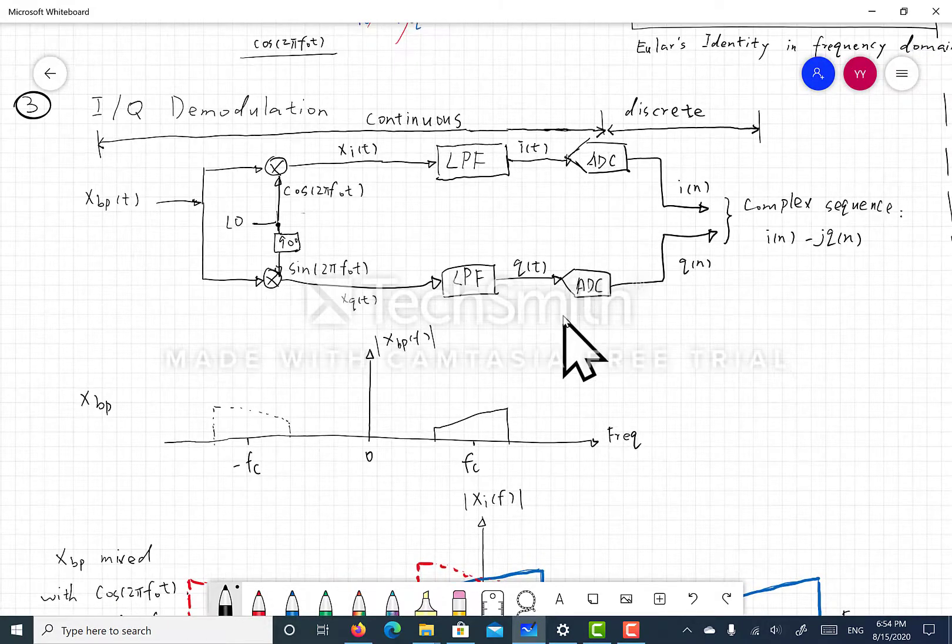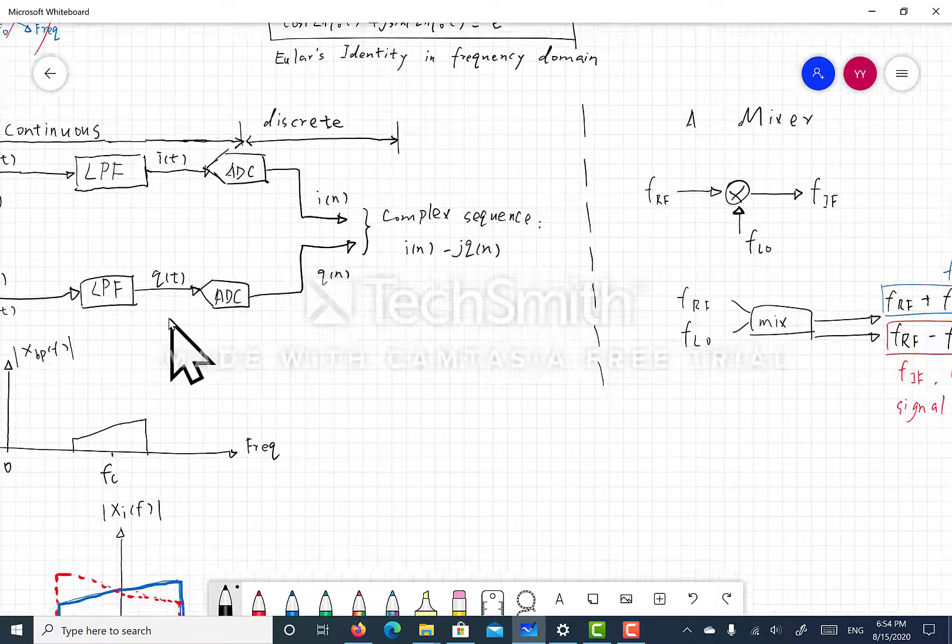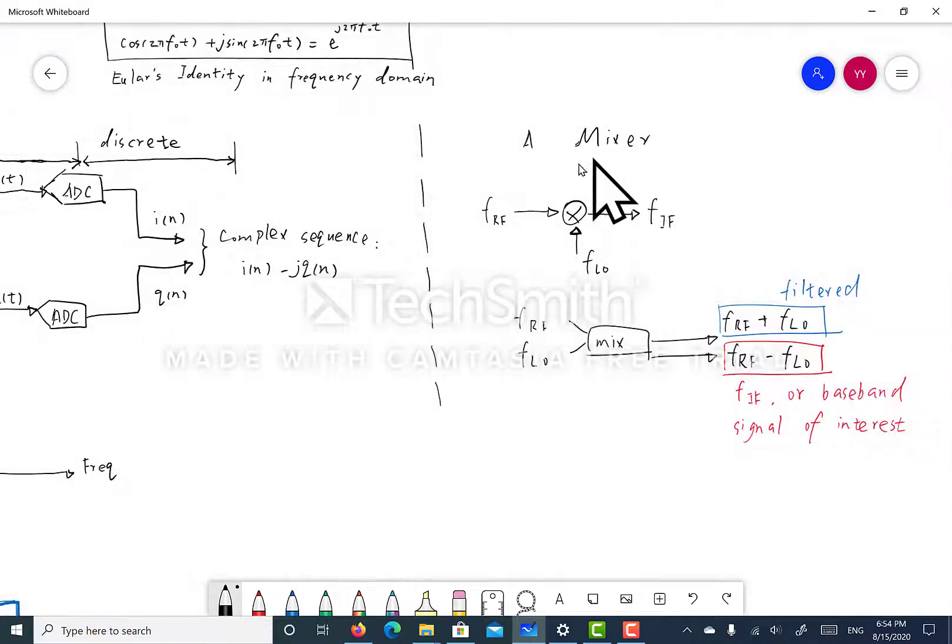So let's take a look at how a mixer works. A mixer takes FRF as an input and also FLO. LO stands for local oscillator. When a mixer mixes two incoming signals, you get a summation of their frequency and you get a subtraction of the two frequencies.